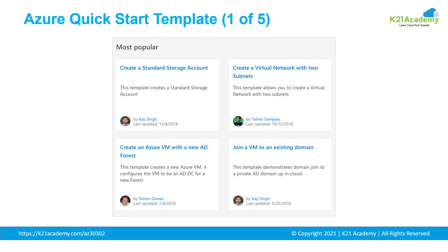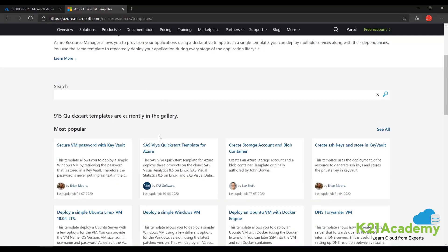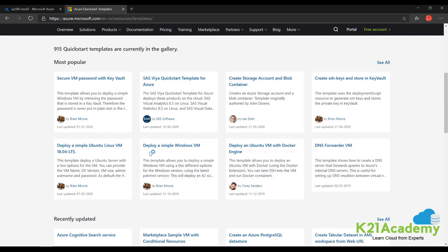Quickstart templates are Azure Resource Manager templates provided by the Azure community. They are completely available on GitHub. This is how the Quickstart template portal looks — there are a lot of templates available. For example, if I want to deploy a simple Ubuntu Linux VM, I just have to click on it.